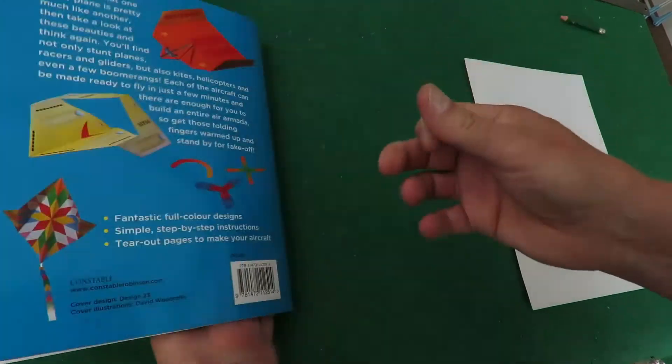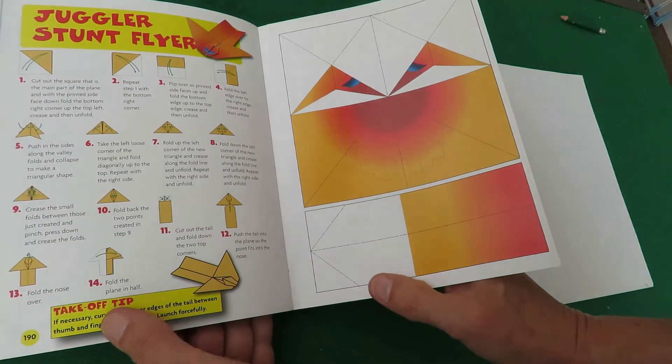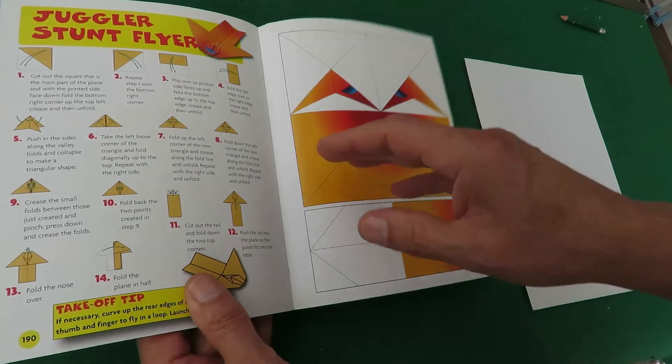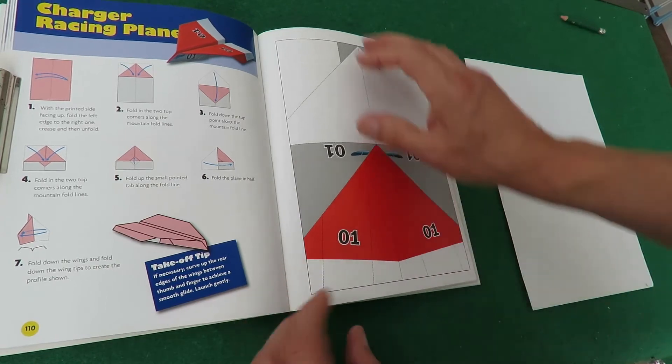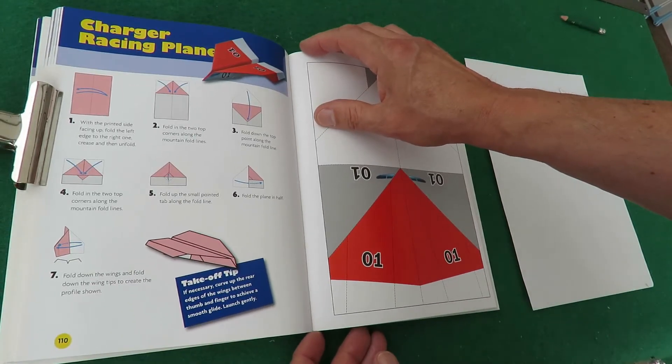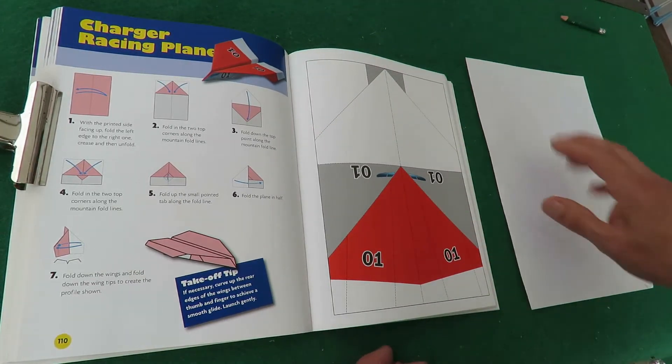You could start from the back and work forwards that way you've always got the instructions for the next one, or you could photocopy it, or you do what I'm going to do which is use a separate piece of paper.